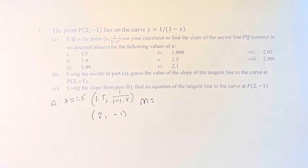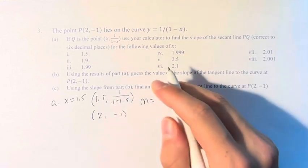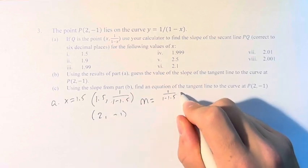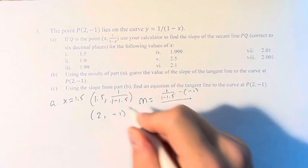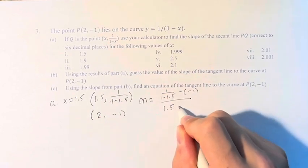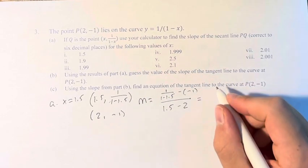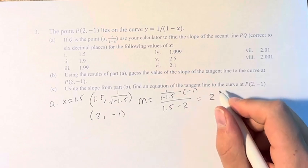So our slope is the change in y over the change in x. So that's going to be 1/(1-1.5) minus (-1) over 1.5 minus 2. And plug this into your calculator and you'll get that this is exactly 2.